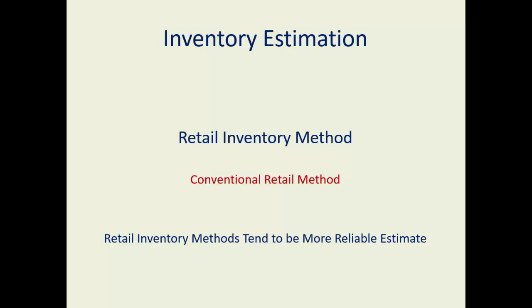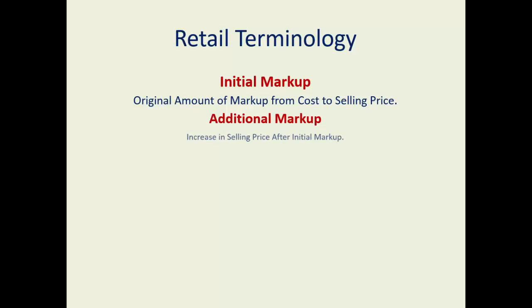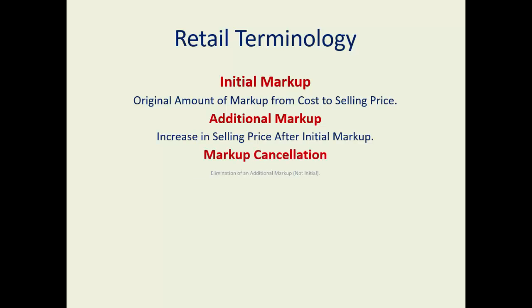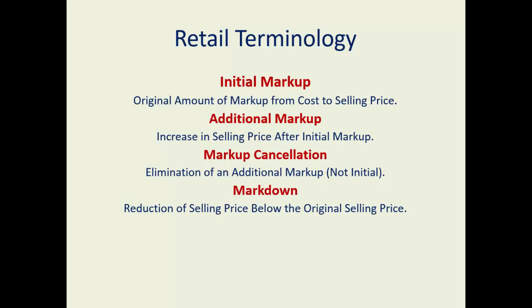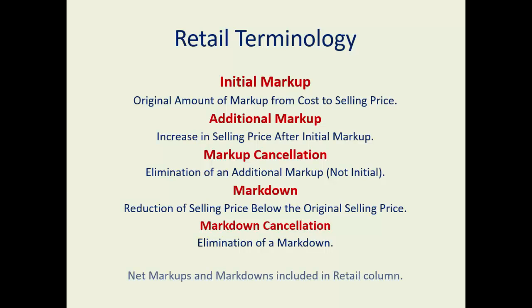The retail inventory method in general tends to be more reliable than the gross profit method as it uses the cost to retail percentage — a little more detail goes into the numbers. Terminology review: the difference between an initial markup and an additional markup. The markup cancellation eliminates the additional markup but not the initial markup. A markdown reduces it below the original selling price, and a markdown cancellation simply cancels that markdown. These are included in the retail column.